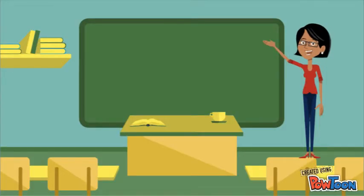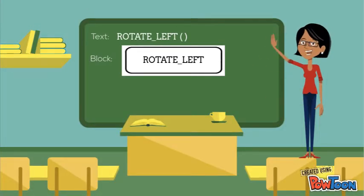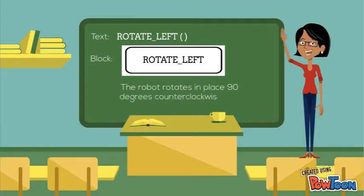The rotate left command rotates the robot in place 90 degrees counterclockwise. In other words, it makes an in-place left turn.